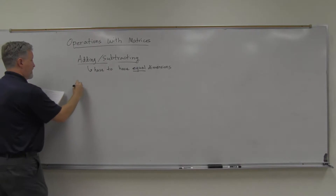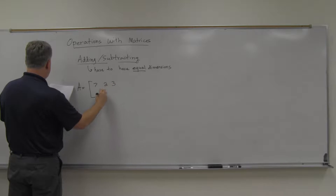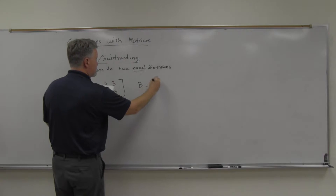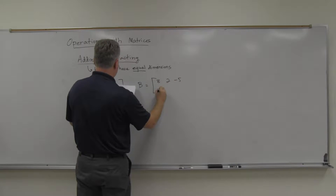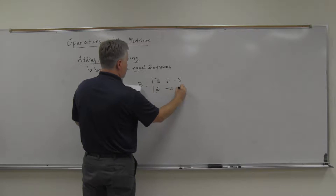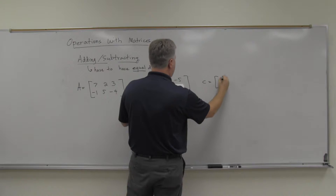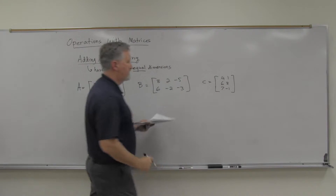For example, A is: 7, 2, 3, negative 1, 5, negative 4. B is: 8, 2, negative 5, 6, negative 2, negative 3. And C is: 4, 1, 6, 8, 7, negative 1 — those are the rows of C.